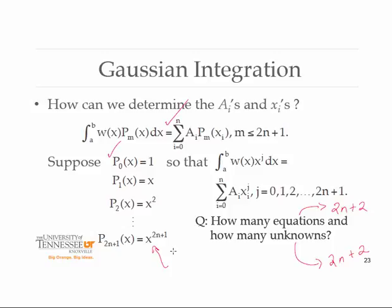You could take each one of these representations and substitute it into the formula. We're going to pick the function to take on all these different forms independently — in one case 1, another case x, another case x squared — where clearly all of them are polynomials of degree less than or equal to 2n plus 1. And if you did that, you would have this representation.